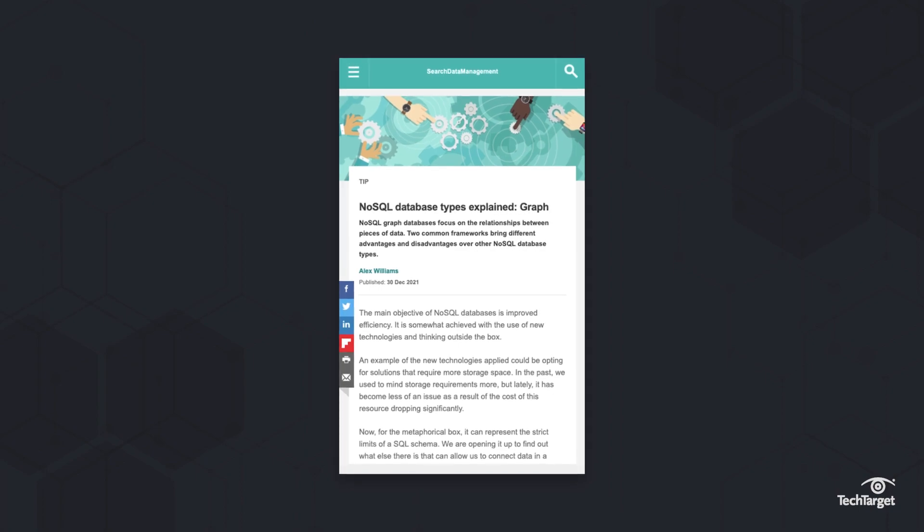RDF is a form of graph database, and while it is the easiest and most common standard for dealing with data relationships, it's not the only tool. Read more about other types of databases by following the link above or in the description below.